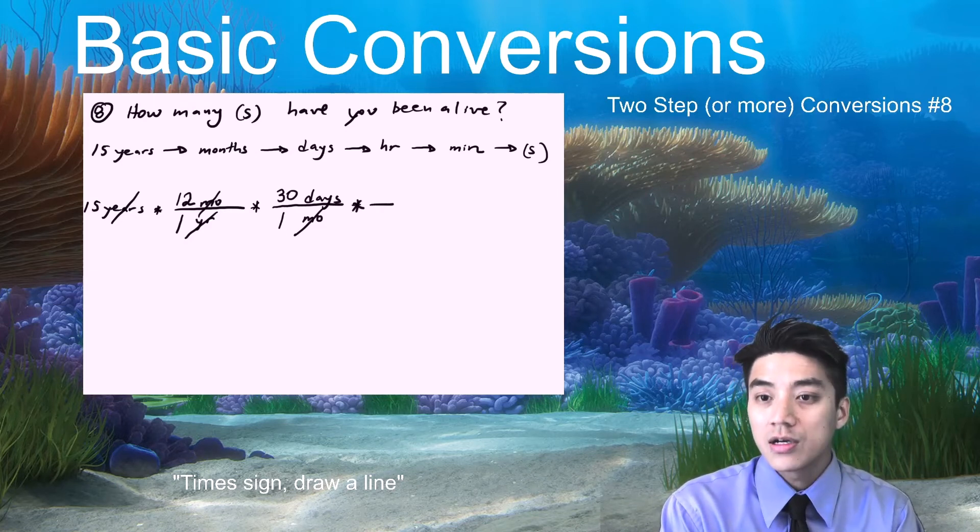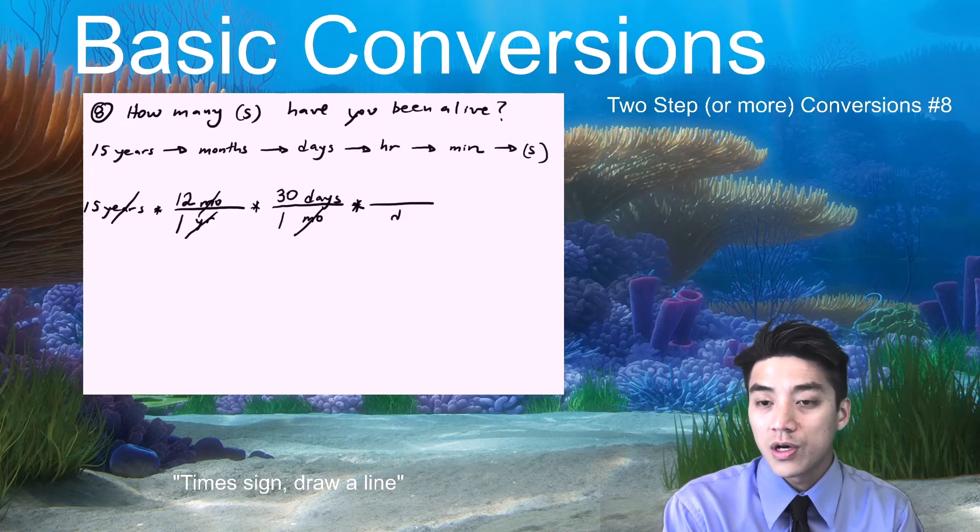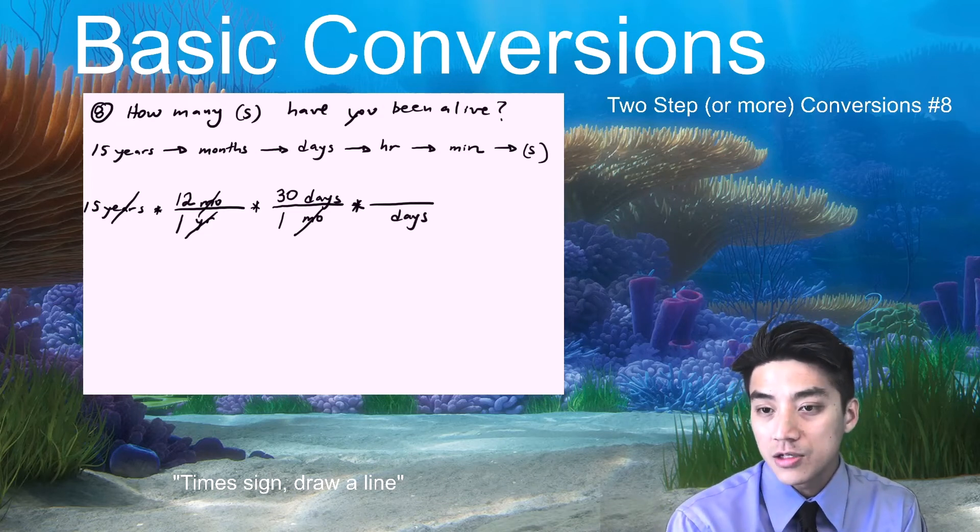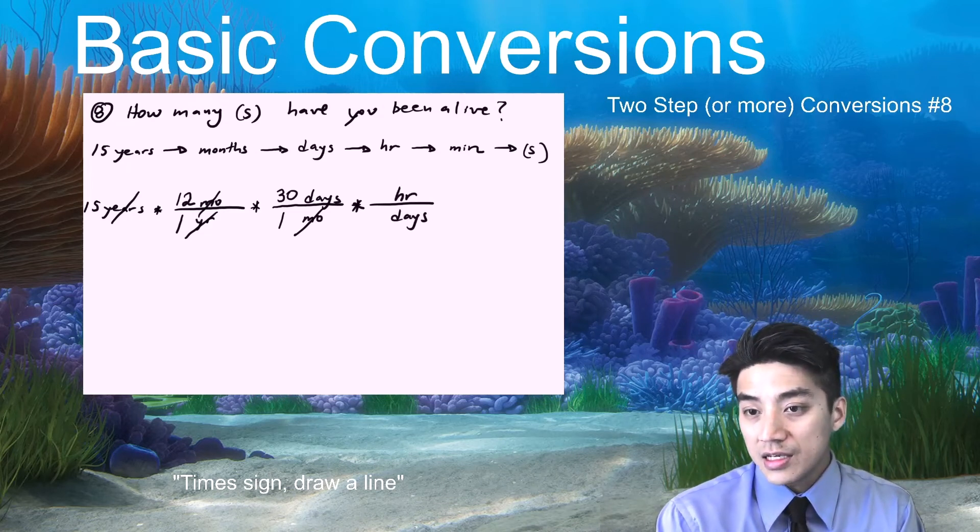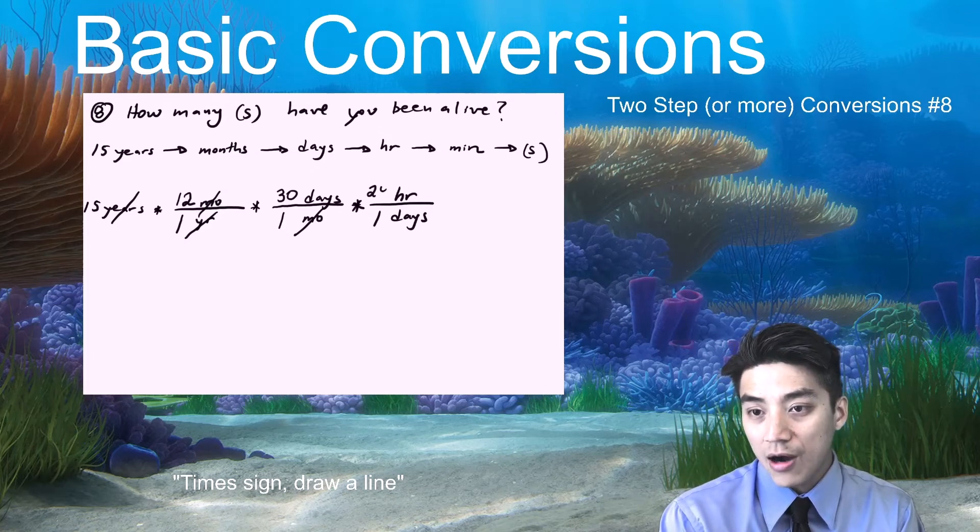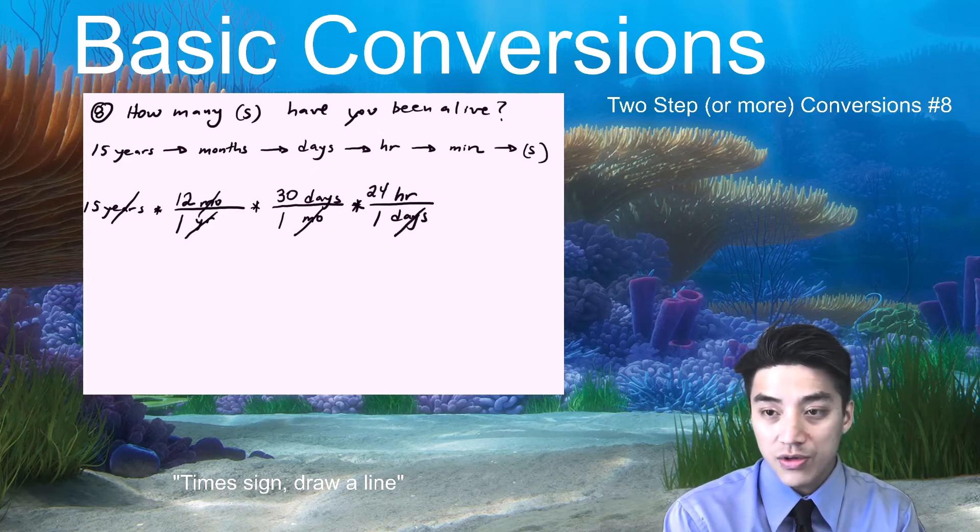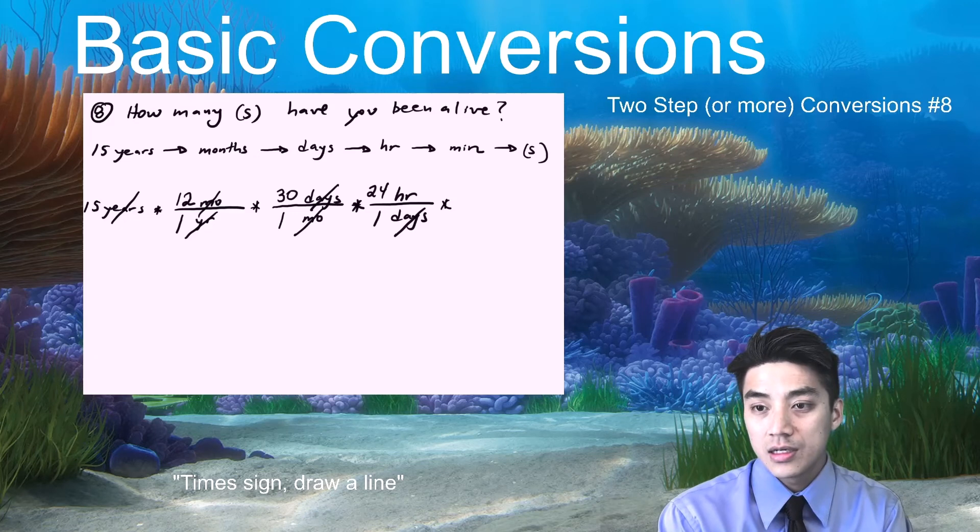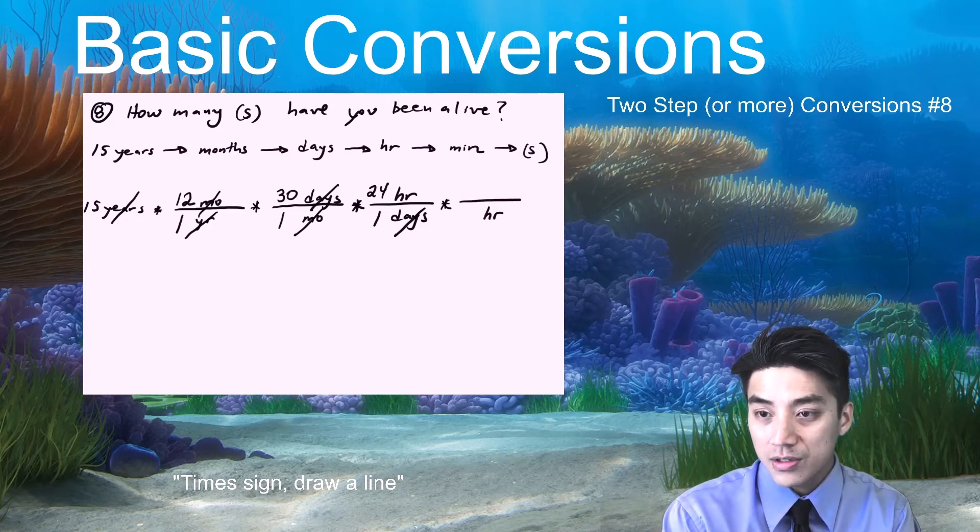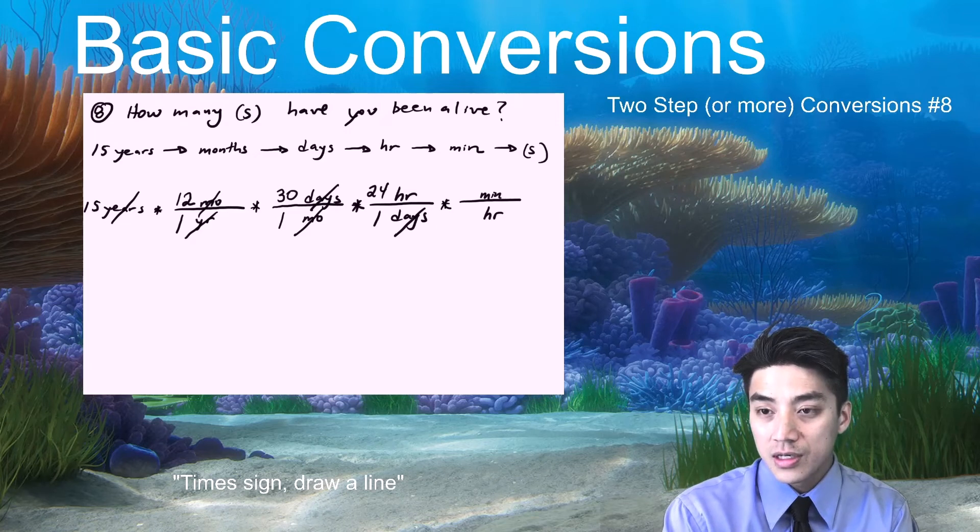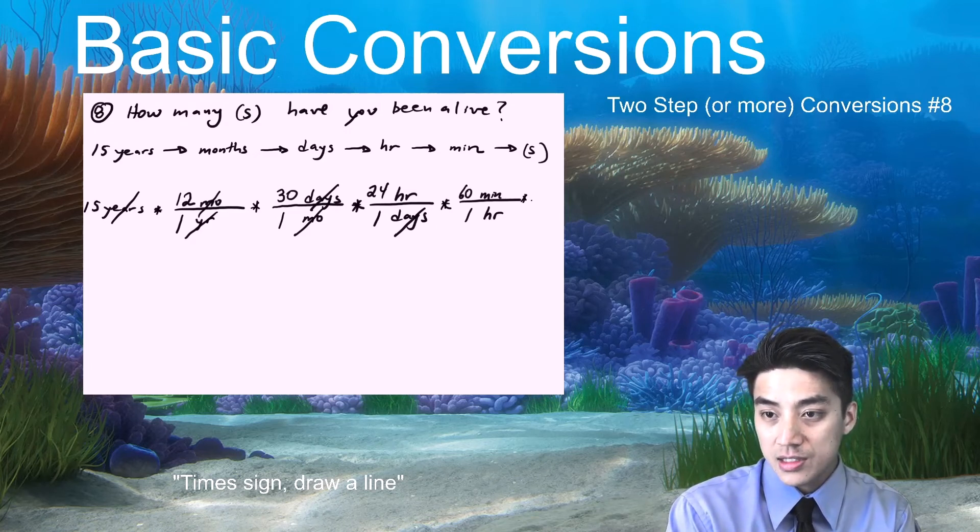Okay. It's not super accurate, but we'll just say 30 days for one month. That's fine. Continue on. Days on the bottom. Hours on top. Everyone knows 24 hours in one day. Okay, continue on. Time sign, draw a line. Hours will go on the bottom this time. Minutes on top. Okay, so 60 minutes for one hour. Continue on.